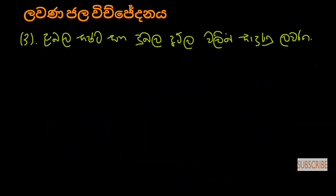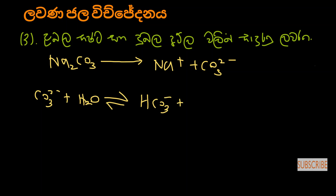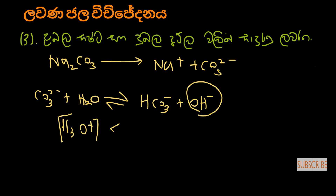Sodium carbonate in aqueous solution — sodium carbonate dissociates into Na+ and carbonate ion. The carbonate ion reacts with water to give bicarbonate ion and OH−. In aqueous solution of sodium carbonate, the carbonate ion hydrolysis gives OH− ions — meaning this cannot give H3O+ ions in high concentration. The solution is basic.